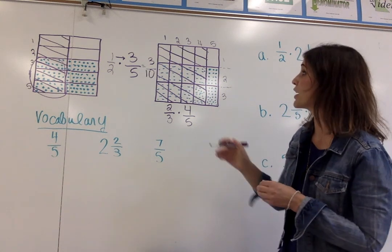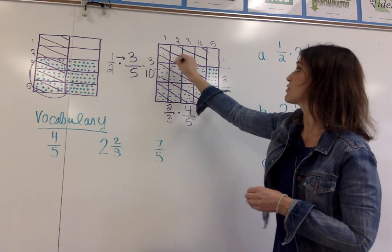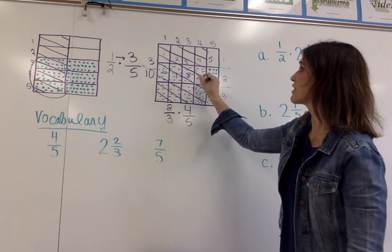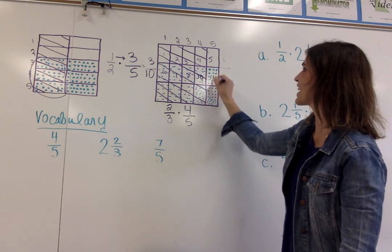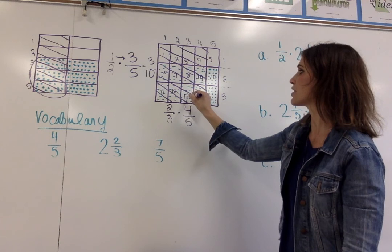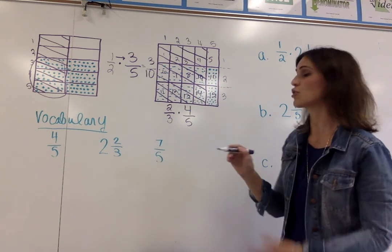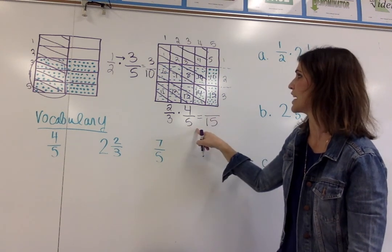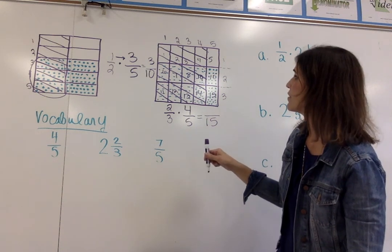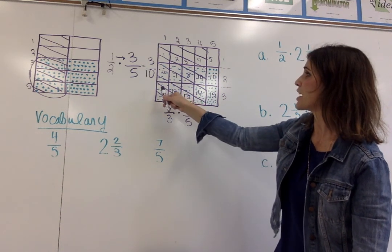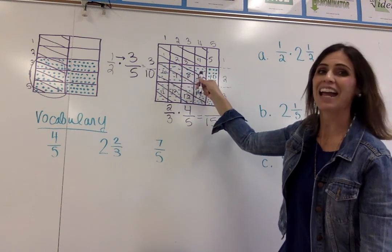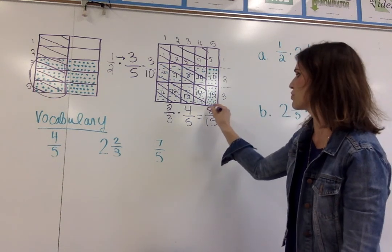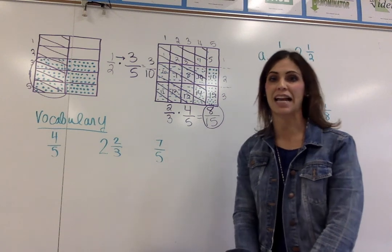If you go back to the square, you can count that there are 15 smaller rectangles. So that means my denominator is 15, which is three times five. And I have a total of eight of those that are overlapping with the dots and the diagonals. So that shows me that the fraction, or my product, is eight-fifteenths.